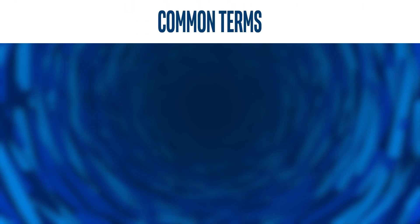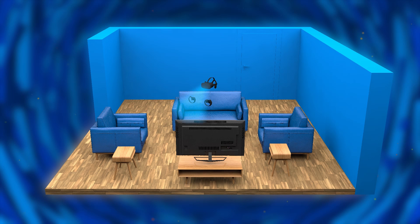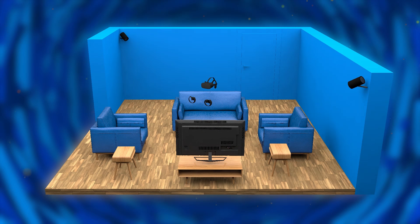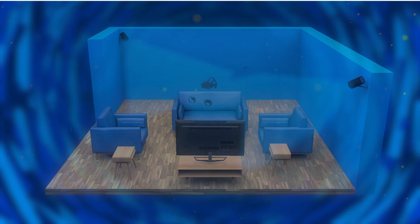Speaking of tracking, there are two main tracking methods. The first is inside-out tracking — it uses sensors and cameras on your HMD to track your head position, orientation, and sometimes hands. The second is outside-in tracking, which uses sensors in your play space to track your HMD position, orientation, and hands from the outside.